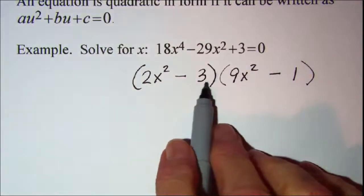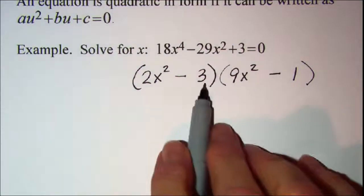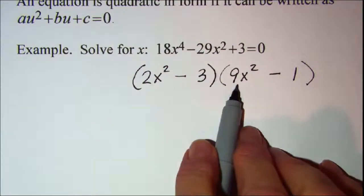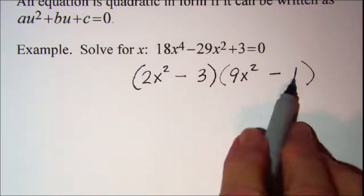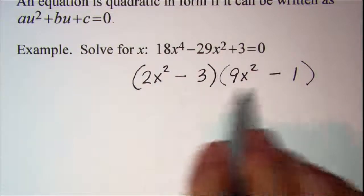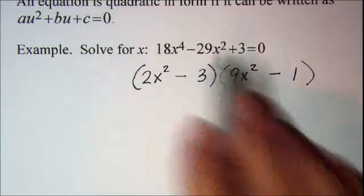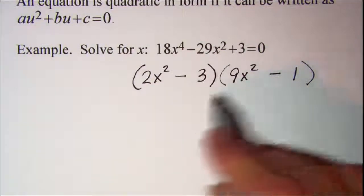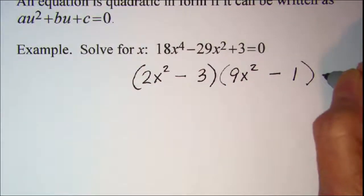And then to check and make sure: negative 3 times 9x squared is negative 27x squared, and then 2x squared times negative 1 is negative 2x squared. When we add those together we do get negative 29x squared. So these are the factors for this quadratic-like expression and that is equal to zero.